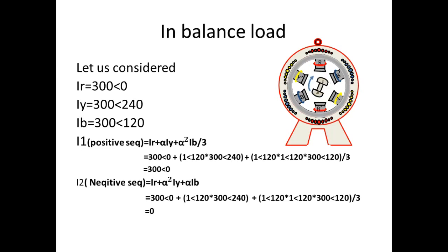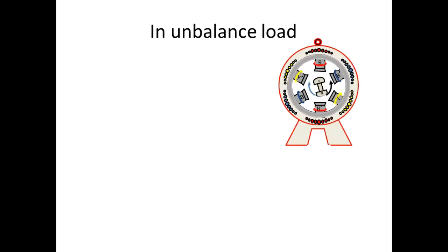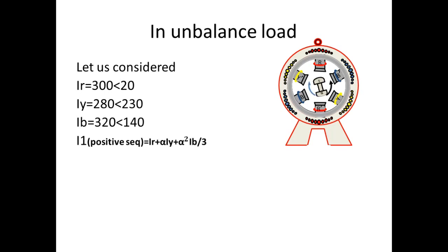In this case, the negative sequence component is present. The negative sequence is equal because the negative sequence has equal magnitude and phase range. Now, let's look at the generator in the unbalanced condition. For example, R phase current is 300A with 20 degree phase shift, Y phase current is 280A with 230 degrees, and B phase current is 320A with 140 degrees.